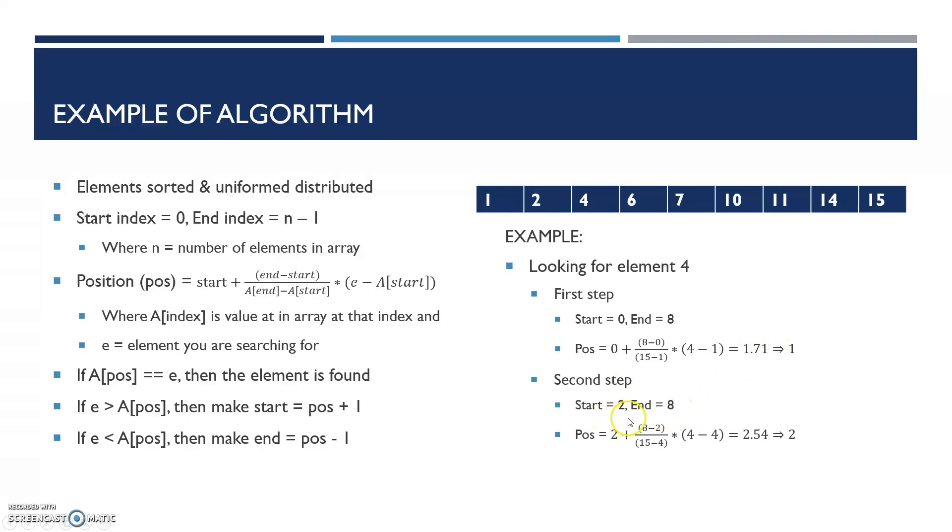You leave end alone and plug in the same values into the equation. At position 2, instead of 1, it becomes 4. At position 2 (0, 1, 2), you have a 4. And 4 minus 4 equals 2.54, and that value turns out to be 2. At position 2, you end up with 4, so you found your element, and it only took 2 steps.